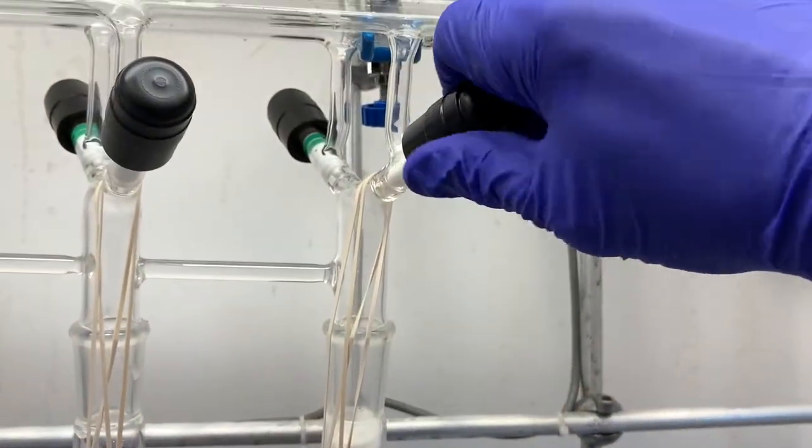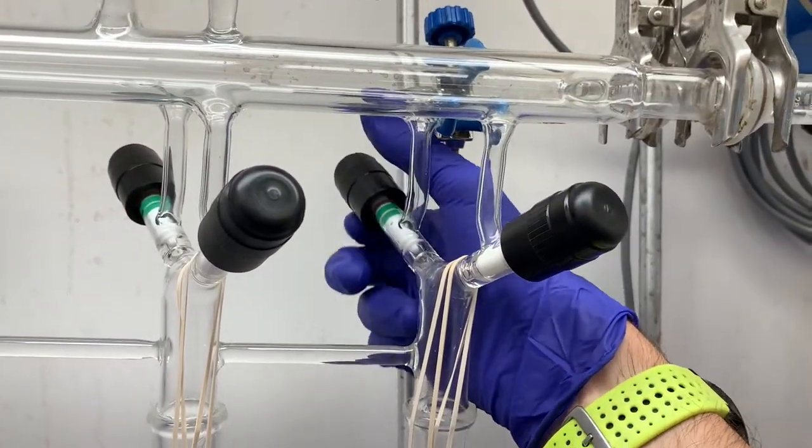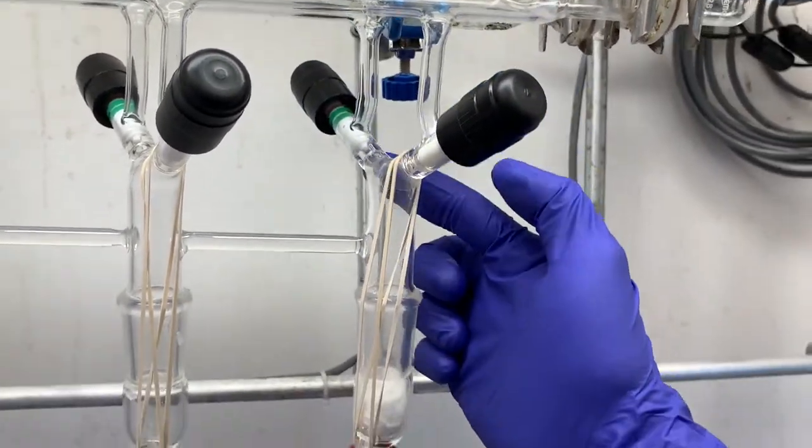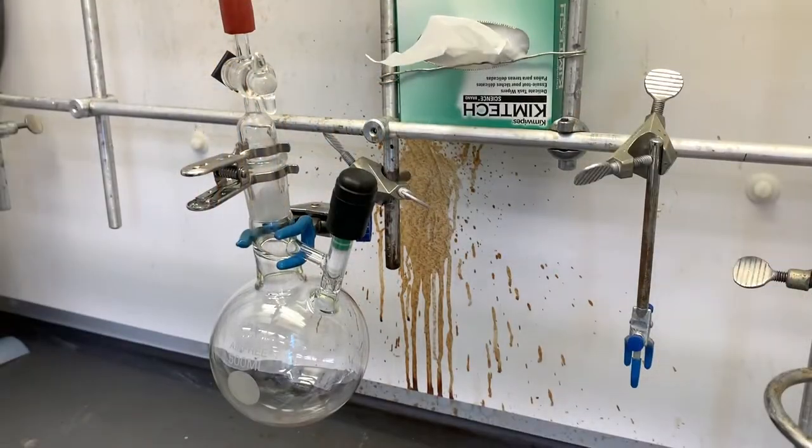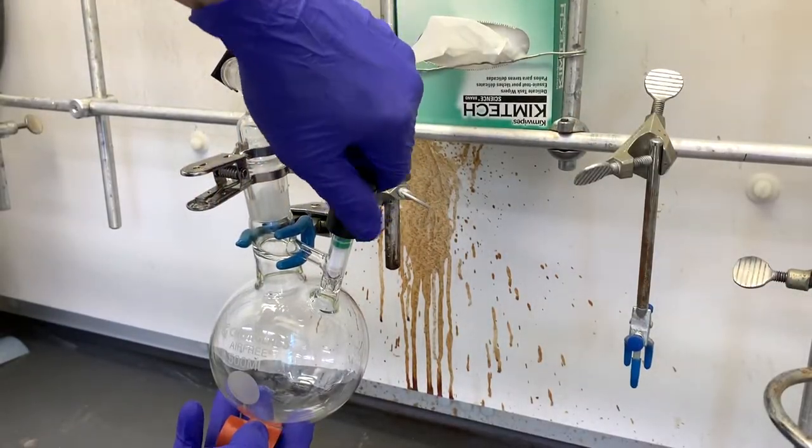Once your flask is at room temperature, close the vacuum port and refill the flask with nitrogen. Perform two more of these evacuate and refill cycles before ending on the refill and having the flask under nitrogen pressure.